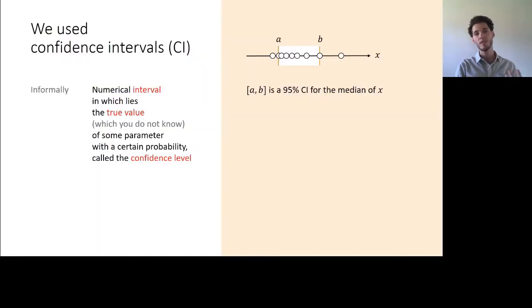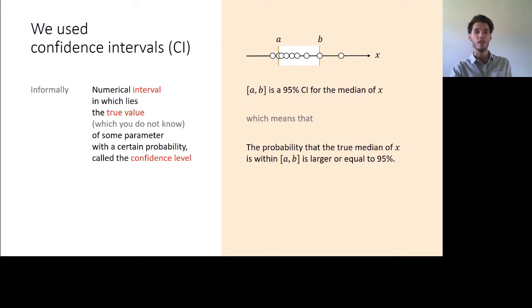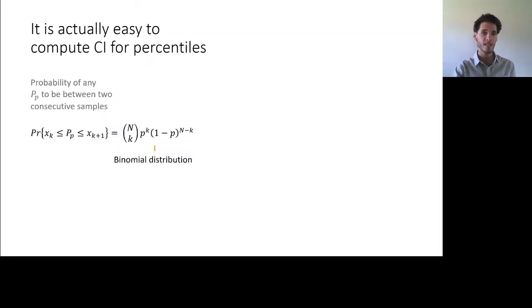The approach we propose is based on confidence interval, which is a statistical approach that allows to estimate the value of an unknown parameter. So if I say, for example, that AB is a 95% confidence interval for the median of a variable X, it means that the probability that the true median of the variable X, which is something I do not know, is between A and B with the probability at least as large as 95%. And the nice thing is that there exists a statistical method that allows us to compute those confidence intervals, and furthermore, we can derive the minimal number of samples of experiments that are required to do this estimation.